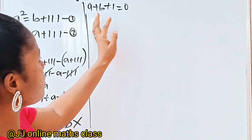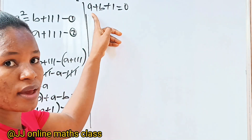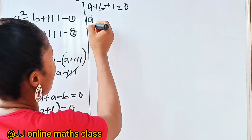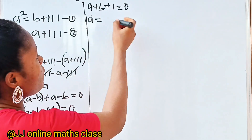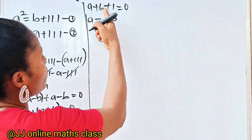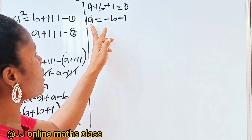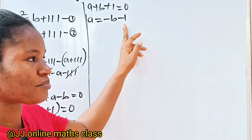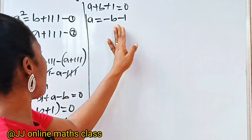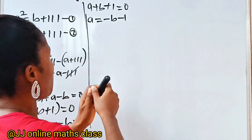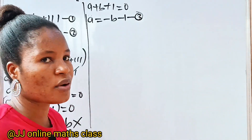From A plus B plus 1 equals 0, let's make A the subject of the formula. We are going to have A equals minus B minus 1. Let's call this equation 3 — it's a very useful equation.